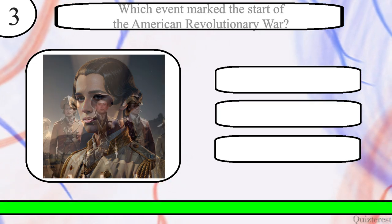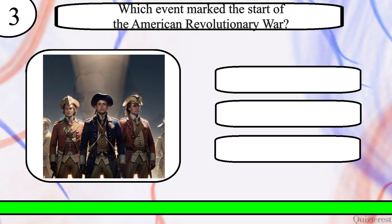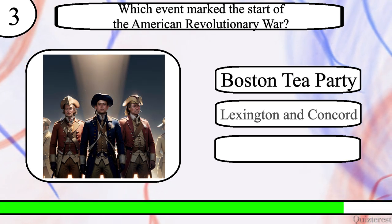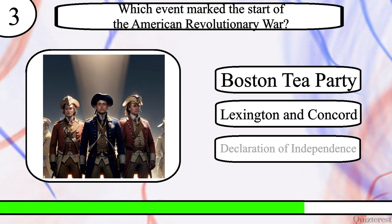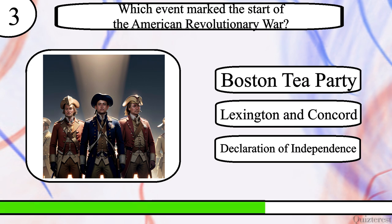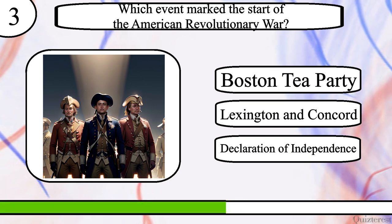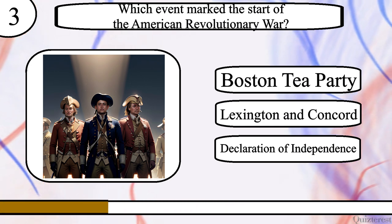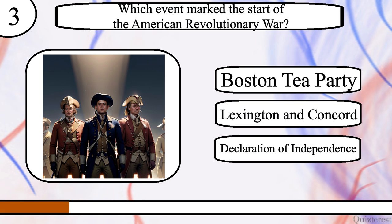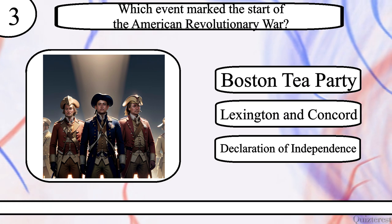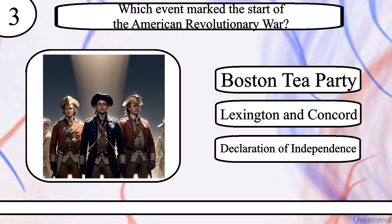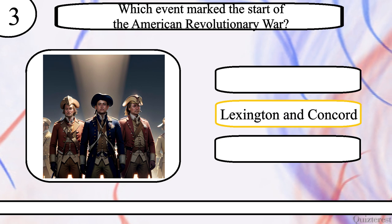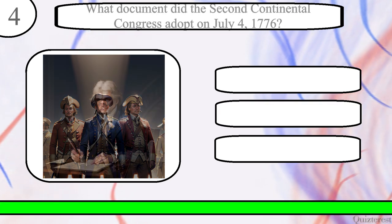Question 3. Which event marked the start of the American Revolutionary War? Boston Tea Party, Battle of Lexington and Concord, or signing of the Declaration of Independence? The correct answer is Battle of Lexington and Concord.